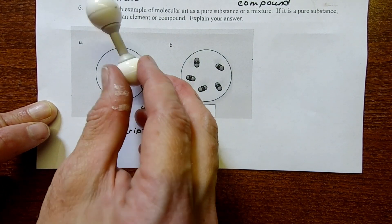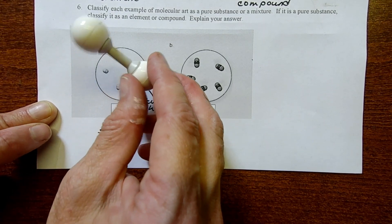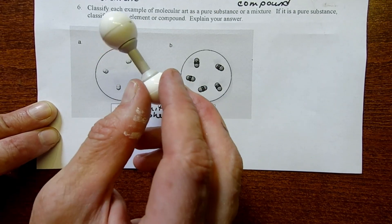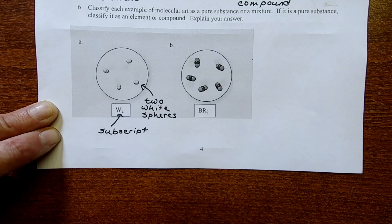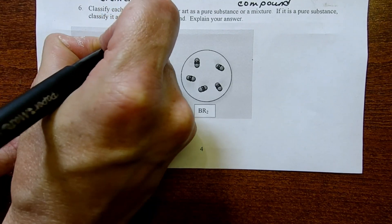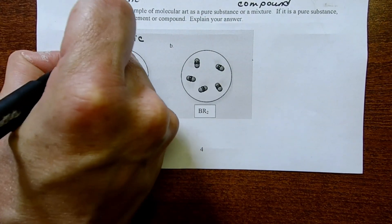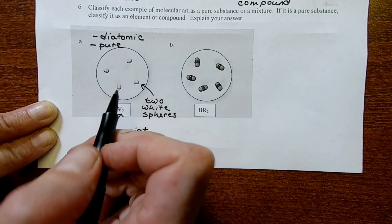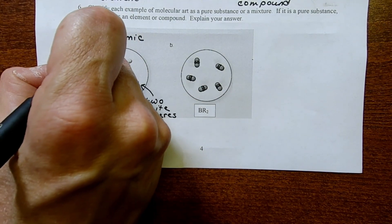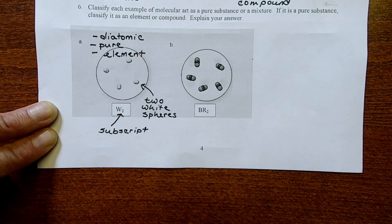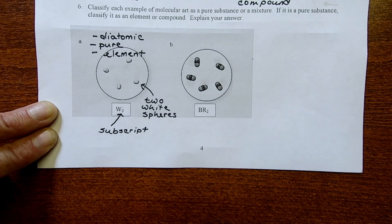In picture A, we have a bunch of diatomic elements, just W connected to W, white connected to white. Let's make a couple of notes here. One, this is diatomic. And two, it's pure because there's only one type of thing in this picture. And three, we're going to classify it as an element because it's composed of a single thing. It's just all W's, all white spheres.